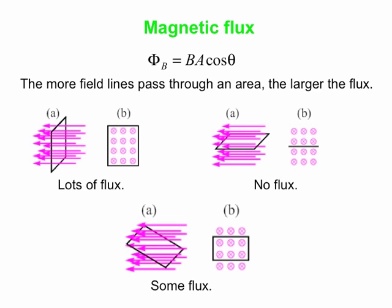So let's go through this in pictures a little bit. So there's our definition of magnetic flux again, b, a, cosine theta. And basically, the more field lines pass through an area, the larger the flux.